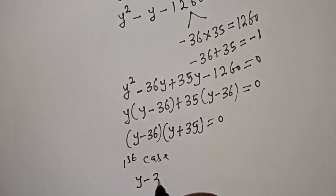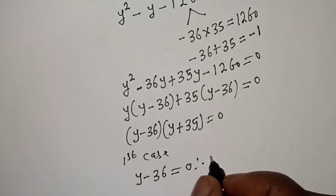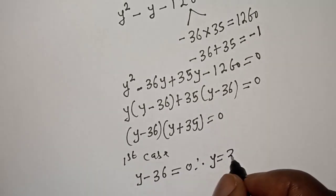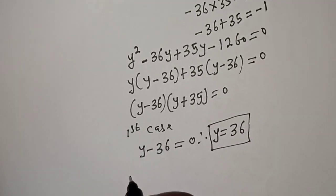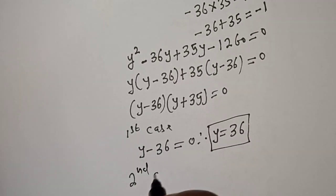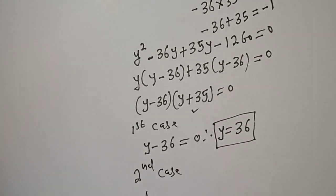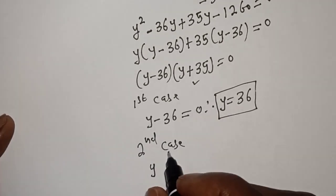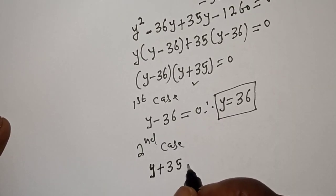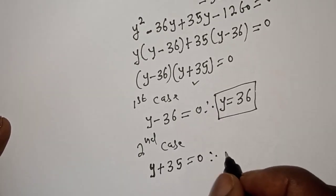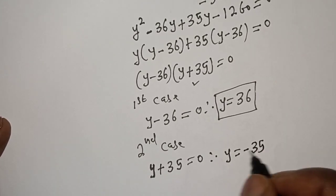There are two cases. From the first case: y minus 36 equals zero, therefore y equals 36. From the second case: y plus 35 equals zero, therefore y equals minus 35.